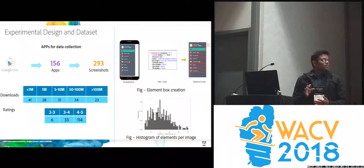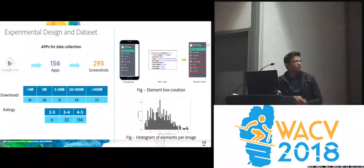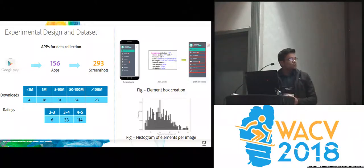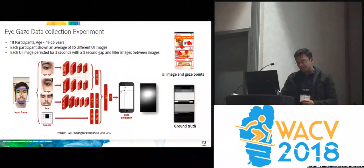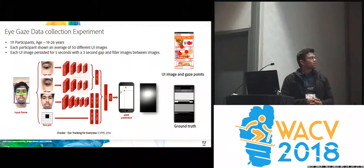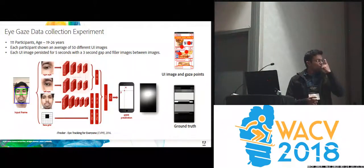We needed element-level bounding boxes for these elements, and we had two methods for that. One was a semi-automated drag-and-drop method. The other was, while capturing the UI images on the mobile itself, we used Android debugger tools and captured the bounding boxes using the XML code. This histogram shows the distribution of UI elements per UI, with an average of around 20. To get the ground truth for these UI images, we did this experiment on Mechanical Turk, where 111 participants were shown an average of 50 UI images each.